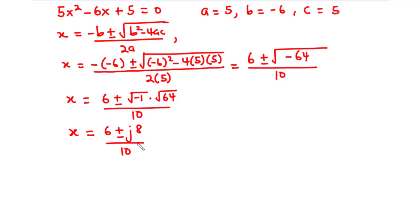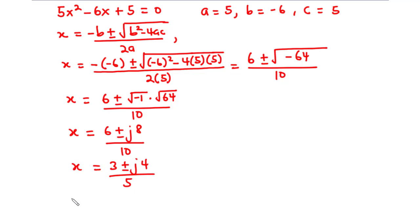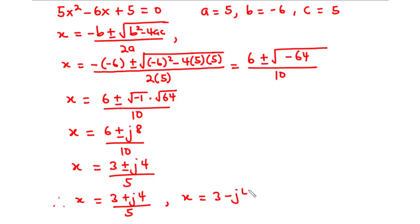At this point we can factor out 2 and cancel. So we have x equals 6 divided by 2, which is 3, plus or minus j times 8 divided by 2, which is 4, all over 10 divided by 2, which is 5. Therefore x equals 3 plus j4 all over 5, or x equals 3 minus j4 divided by 5.